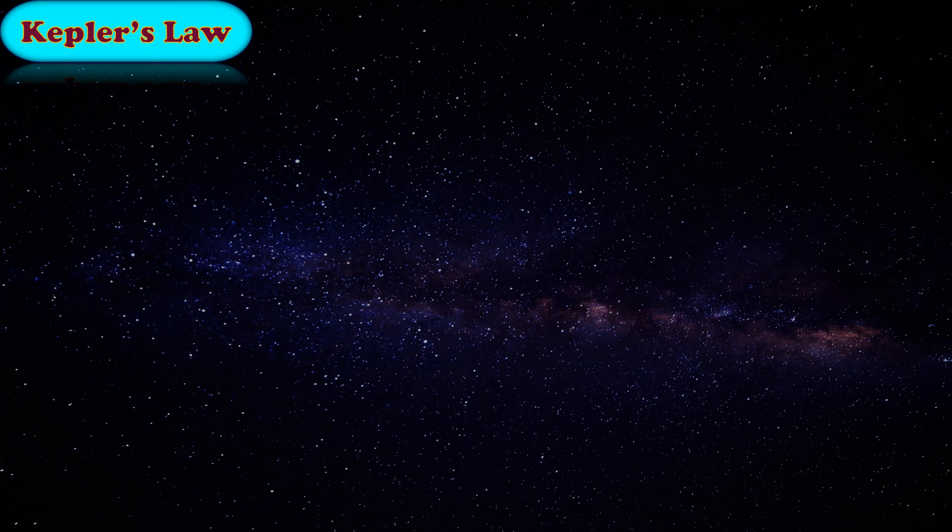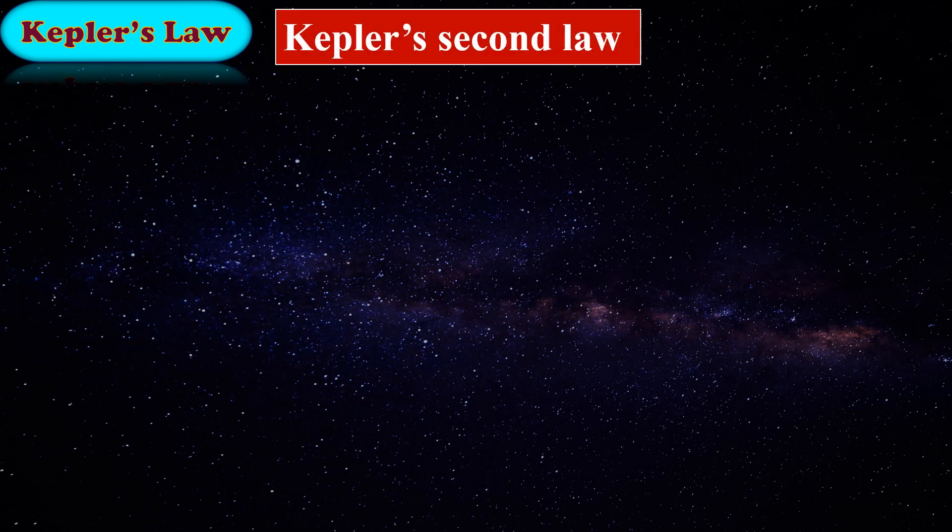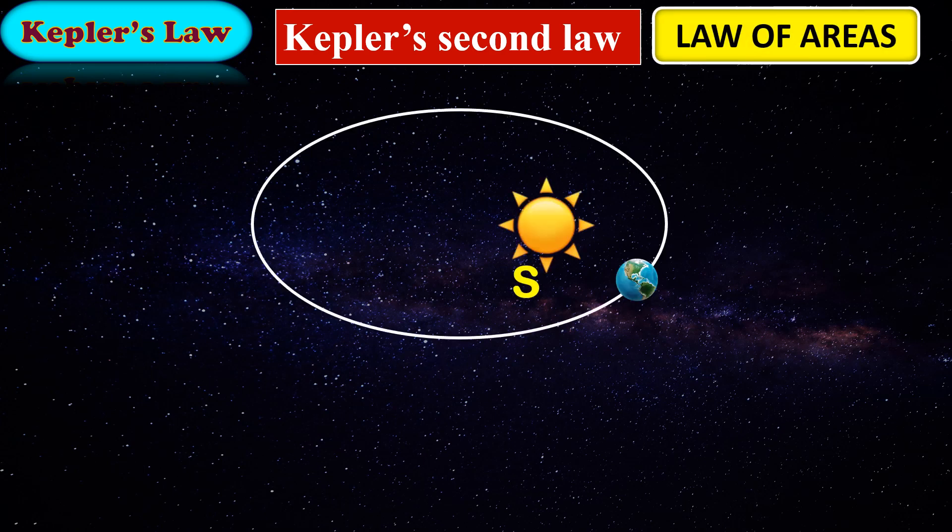Next is Kepler's second law. Kepler's second law is also known as the law of areas. Consider a line joining between the sun and the Earth at position A.